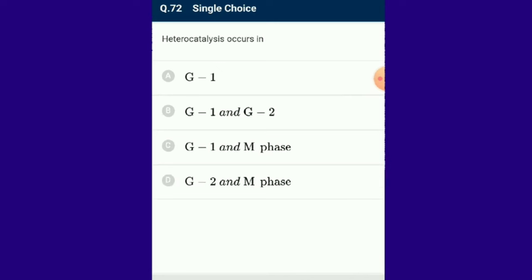Question number 72: Heterocatalysis occurs in which phase? Heterocatalysis occurs in G1 and G2 phases. The double-stranded DNA in eukaryotes can perform two types of catalytic reactions: autocatalytic reaction, where the reaction product itself is the catalyst; and heterocatalytic reaction, where the template DNA mediates the synthesis of mRNA. The answer is option B.